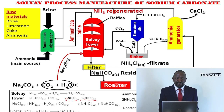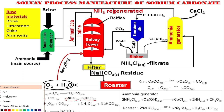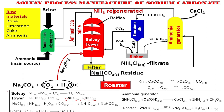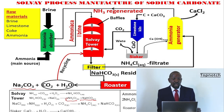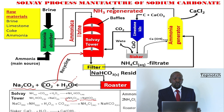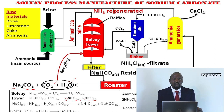In the roaster, the sodium hydrogen carbonate decomposes to sodium carbonate plus water plus carbon dioxide. We have now got our main product — sodium carbonate — as shown on the screen. The carbon dioxide and water produced in the roaster are recycled back to the Solvay tower, because as you have seen in the ammonia reaction, these two are also required there.